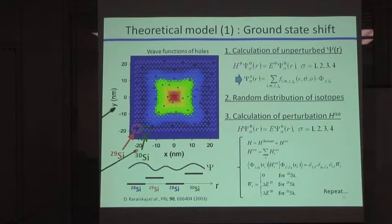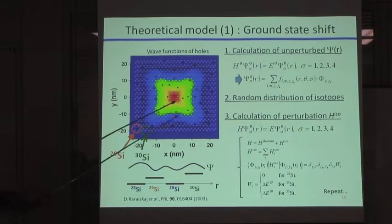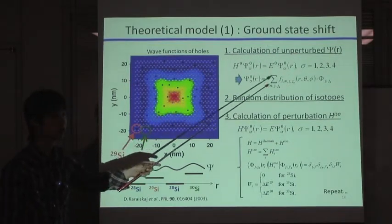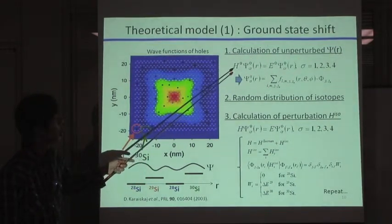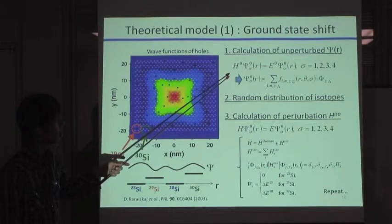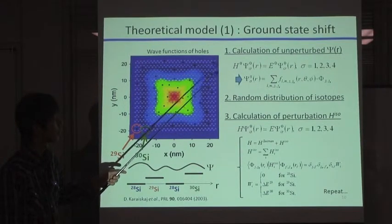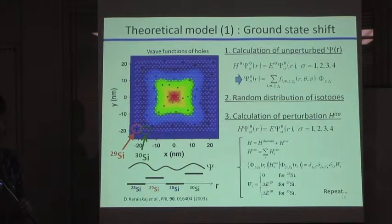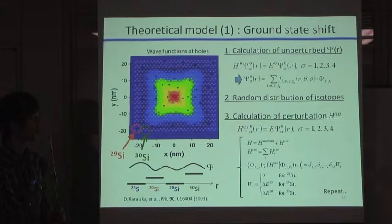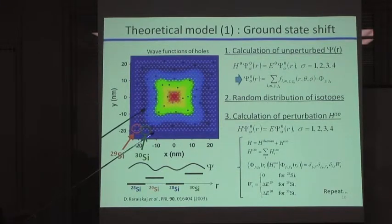And we calculated the spatial wave function of acceptor-bonded holes by solving a Schrödinger equation with a Hamiltonian of Zeeman term, but without isotopic perturbation Hamiltonian. And then, we distributed three different isotopes on each lattice, one by one, like this.